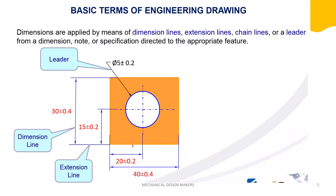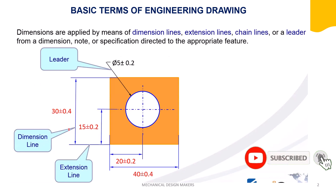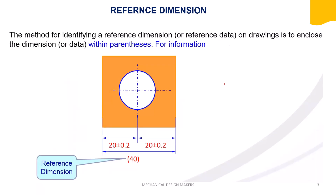A line with arrows at both ends is called a dimension line. We may also use a leader line directly to the feature of part to indicate the dimension — this is called a leader line.